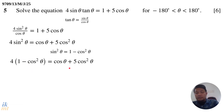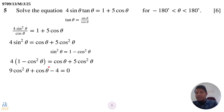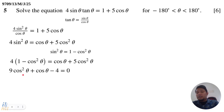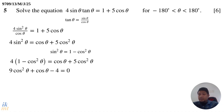Now we have an equation that is only in terms of cosine theta. We can simplify and bring everything to one side to get a standard form. This is what we call a disguised quadratic, meaning we can use the method of solving quadratic equations to solve for cosine theta, and then solve for theta. This one can be solved using the quadratic formula.